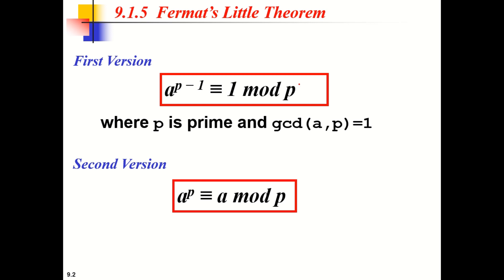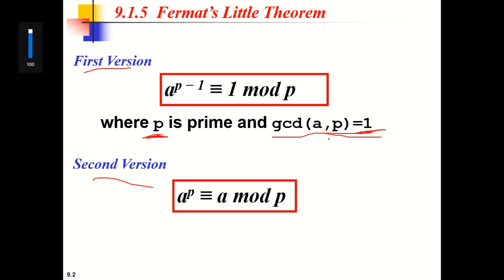Fermat's theorem has two versions: first and second. The first version says that if we have a number P which is prime and another number A, and both of these numbers are co-primes — meaning GCD of A and P is equal to 1, i.e., A and P are relatively prime — then the condition A raised to P minus 1 is congruent to 1 mod P holds true.